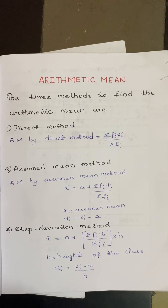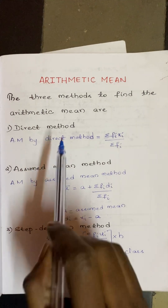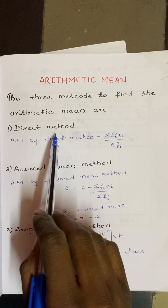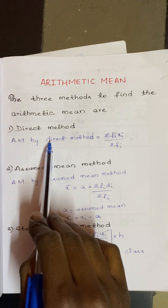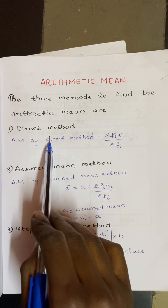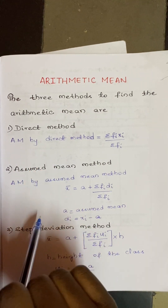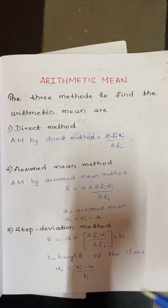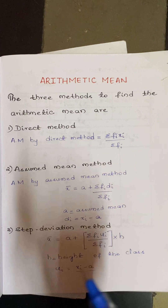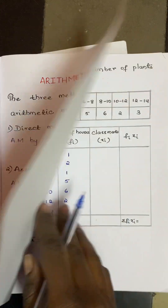Today in this class I'm going to explain how to find the mean using the direct method. We use the direct method when the values of fi and xi are smaller.